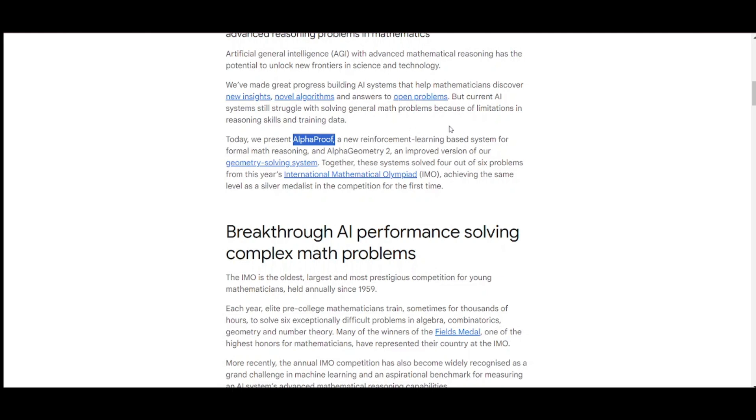They announced that breakthrough models AlphaProof and AlphaGeometry 2 were able to solve advanced reasoning problems in mathematics. They announced AlphaProof, a new reinforcement learning-based system for formal math reasoning, and AlphaGeometry 2, an improved version of their geometry-solving AI system.